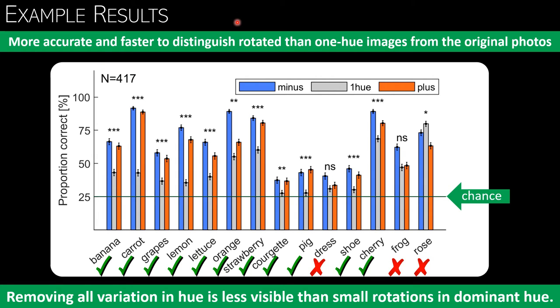the one hue version was still more difficult to distinguish from the original than the rotated hue version. This can be seen by the gray bars here and here being lower than the blue and red bars here.